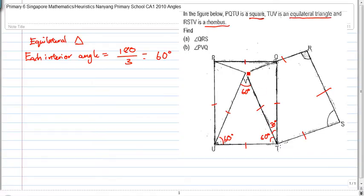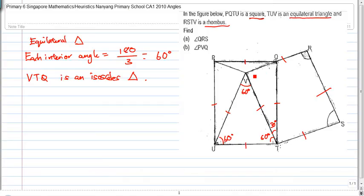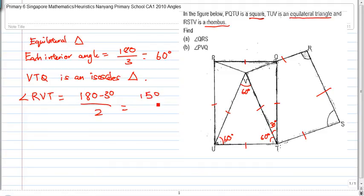VTQ is an isosceles triangle, because two of these sides are equal. So for angle VTQ, all I have to do is take 180 minus 30, and since these two lengths are equal, I divide by 2 — so I get 150 divided by 2, which is 75 degrees.